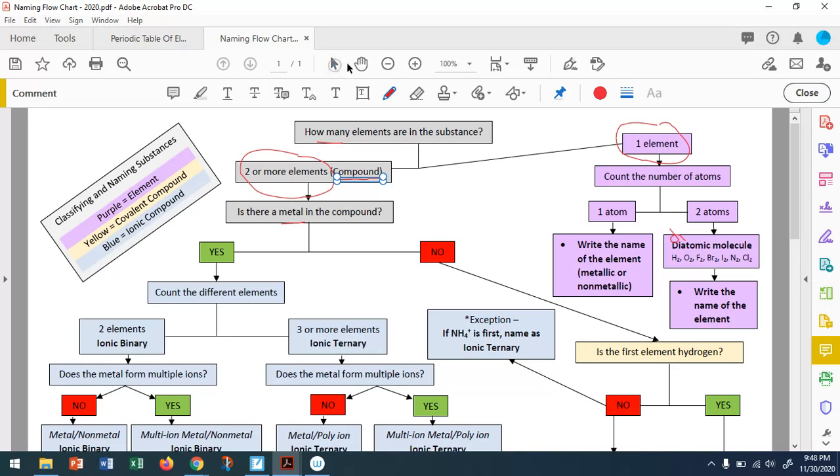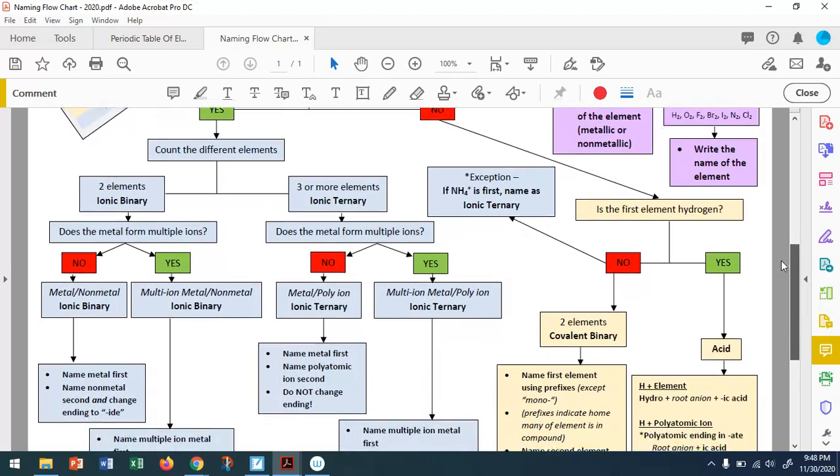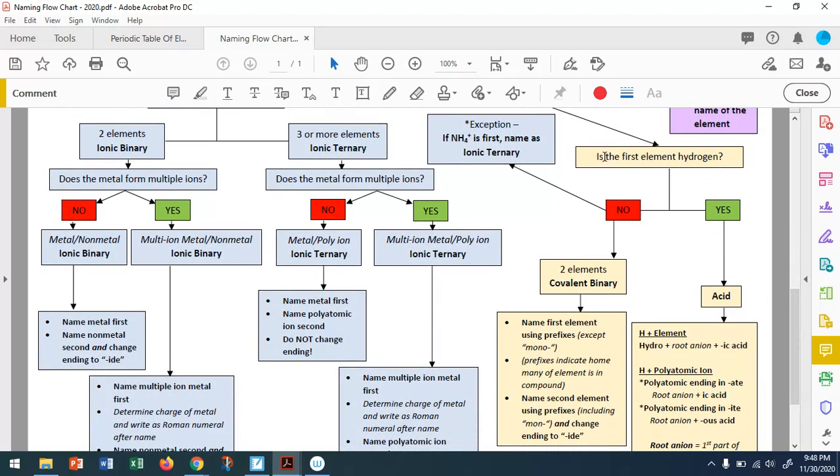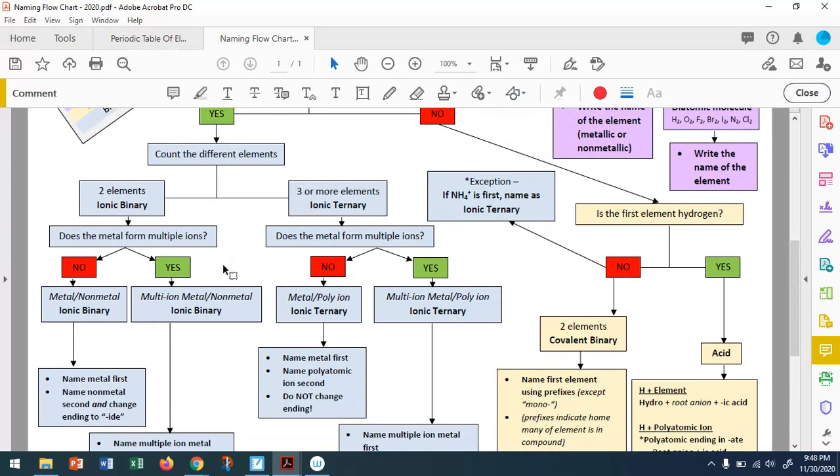So our goal is that this chart, if we work our way from top to the set of rules, will allow us to write the name of any substance we will deal with. Within covalent, I care about whether the element hydrogen comes first to determine my rules. Within ionic, I care about how many elements are within the substance, and then I follow some rules within that. So this chart will be available for you to use as you're doing your practice.